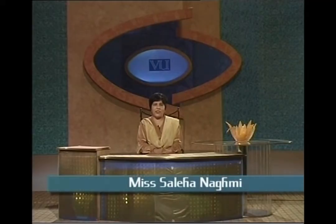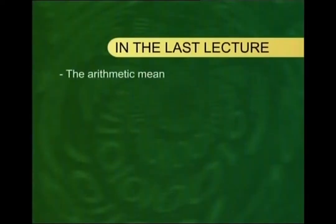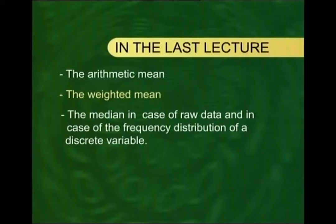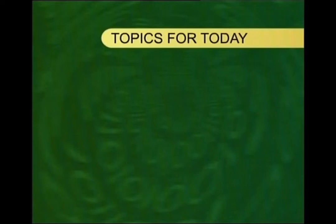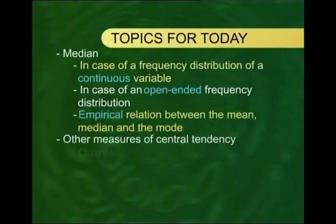As-salamu alaykum, welcome to lecture number eight of the course on Statistics and Probability. In the last lecture, I discussed the concept of central tendency — in particular, the arithmetic mean, the weighted mean, and the median for raw data and for the frequency distribution of a discrete variable. Today, I will continue with the median and discuss its computation for the frequency distribution of a continuous variable, and later we will cover some other measures of central tendency.